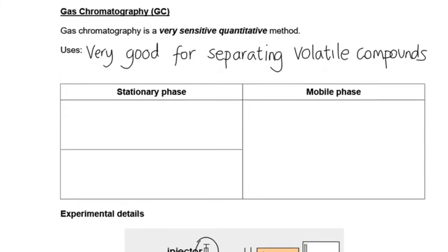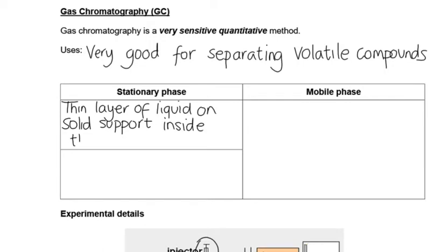We've got two boxes for stationary phase here, because that column could be filled with two types of thing. We could have a thin layer of liquid on a solid support, because it's hard to put liquids in there, so we need some sort of solid supports, maybe some beads, and our liquid coats those beads inside that column. So it's a thin layer of liquid inside the column. Now the support is not the stationary phase. That's like the glass in TLC, it's just there to hold the stationary phase in place. So the stationary phase is the liquid here.